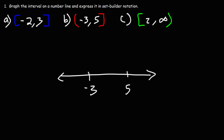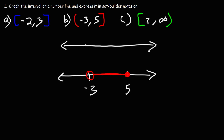You could also do it this way too. Sometimes you will see a bracket and a parenthesis graphed differently. Some textbooks may graph it with a parenthesis at negative 3 and a bracket at 5 — basically exactly what you see here. You can graph it on a number line either one of those two ways.